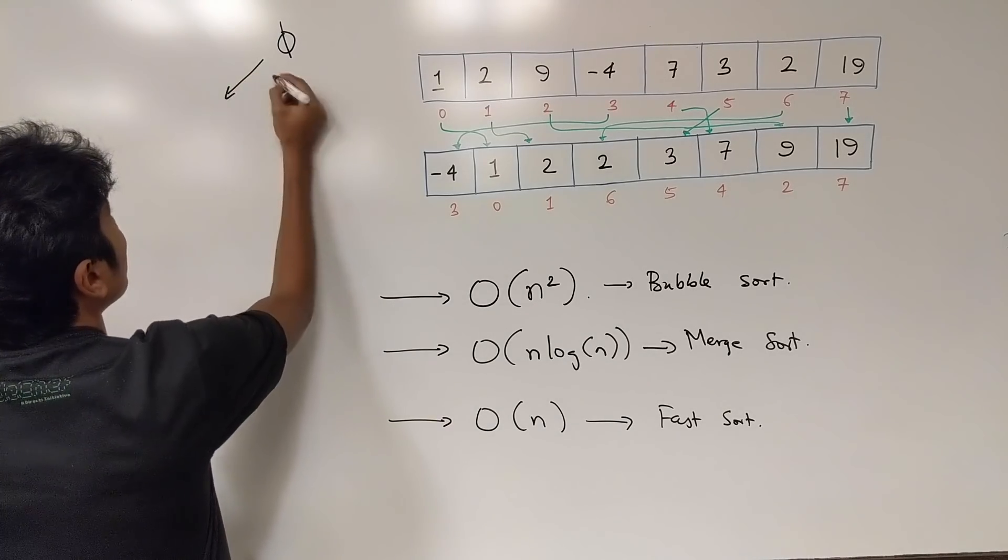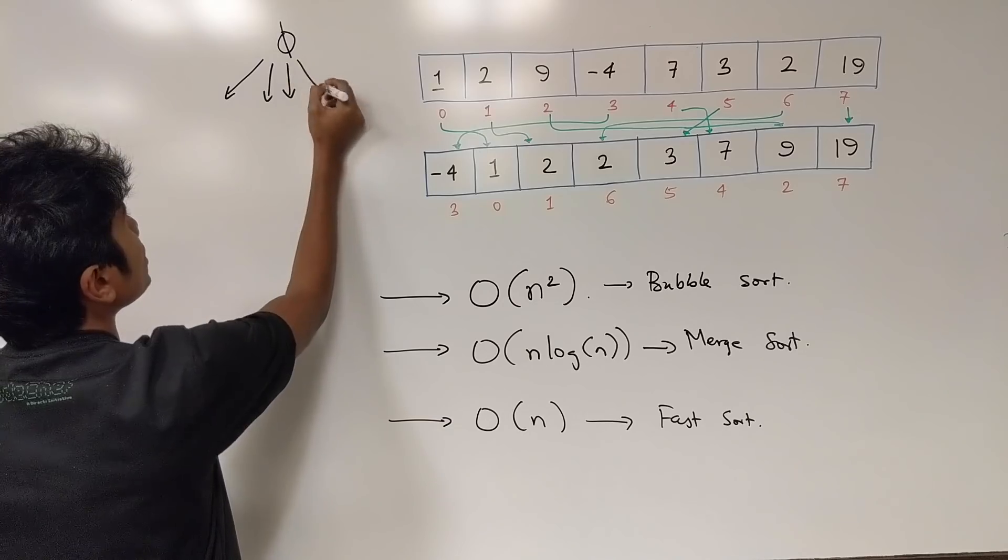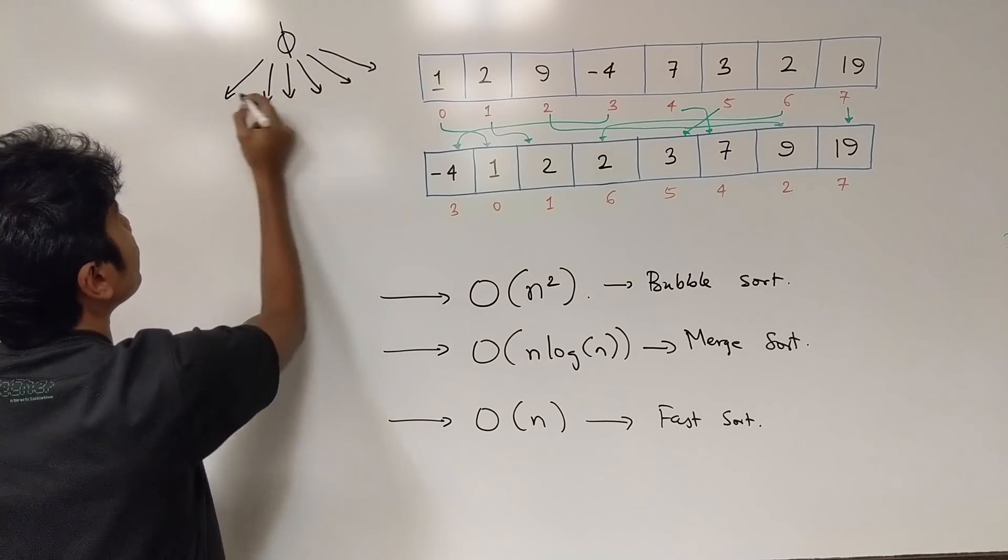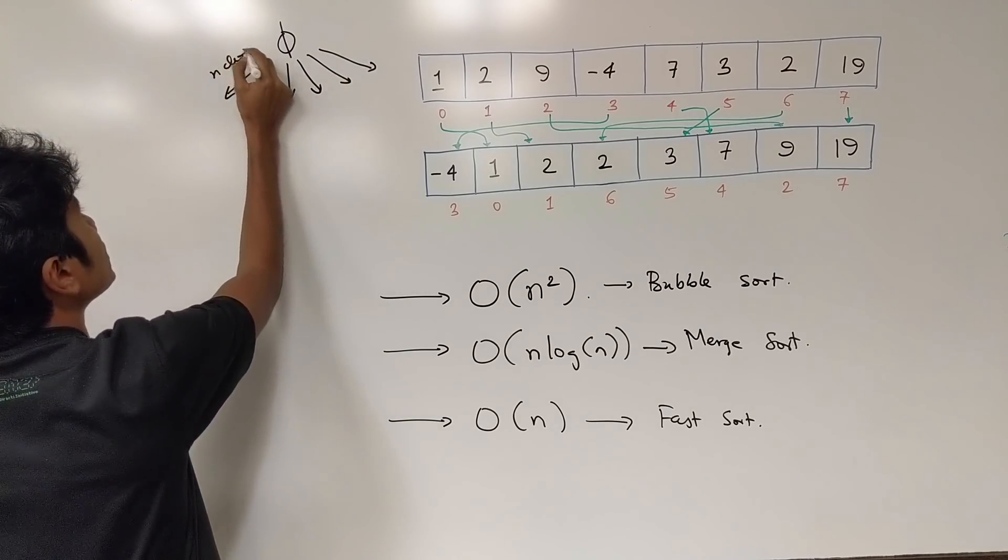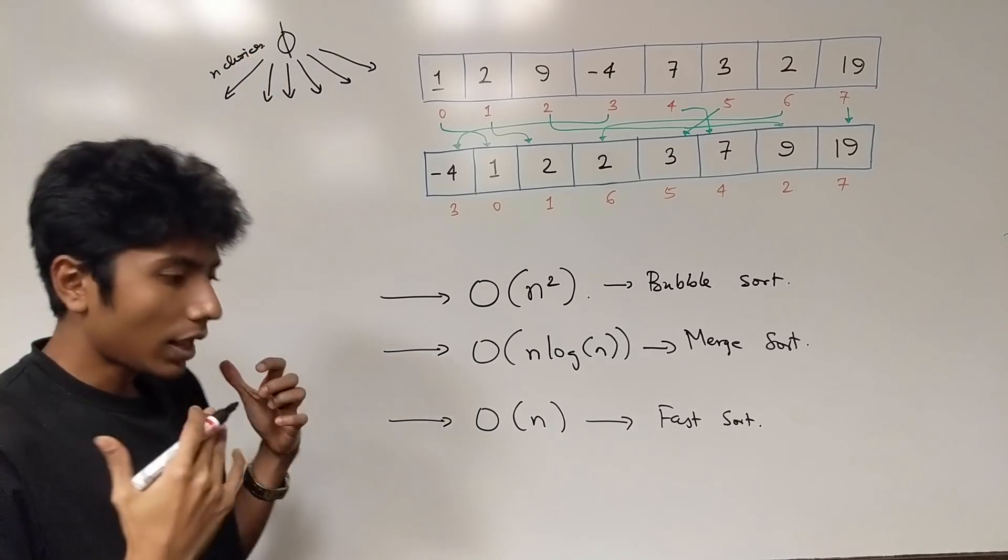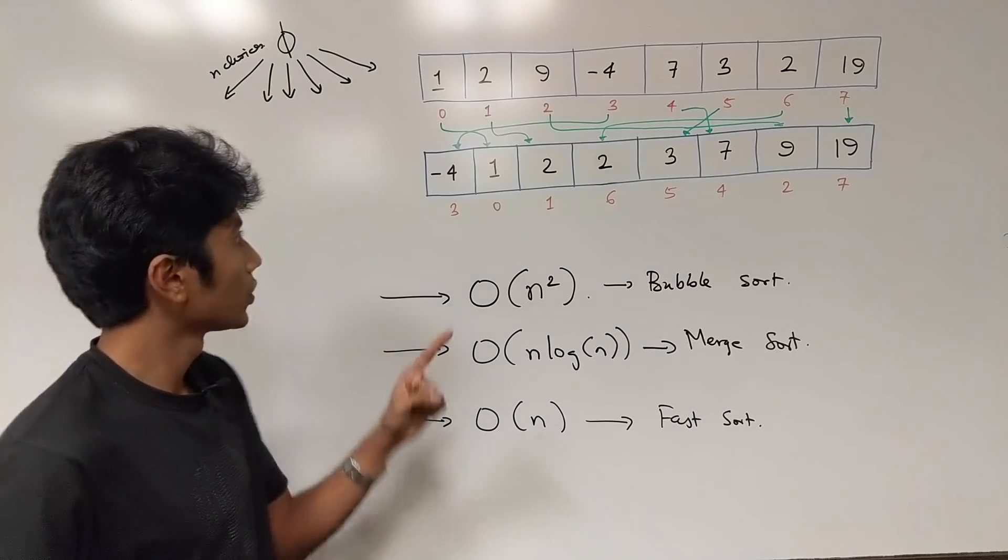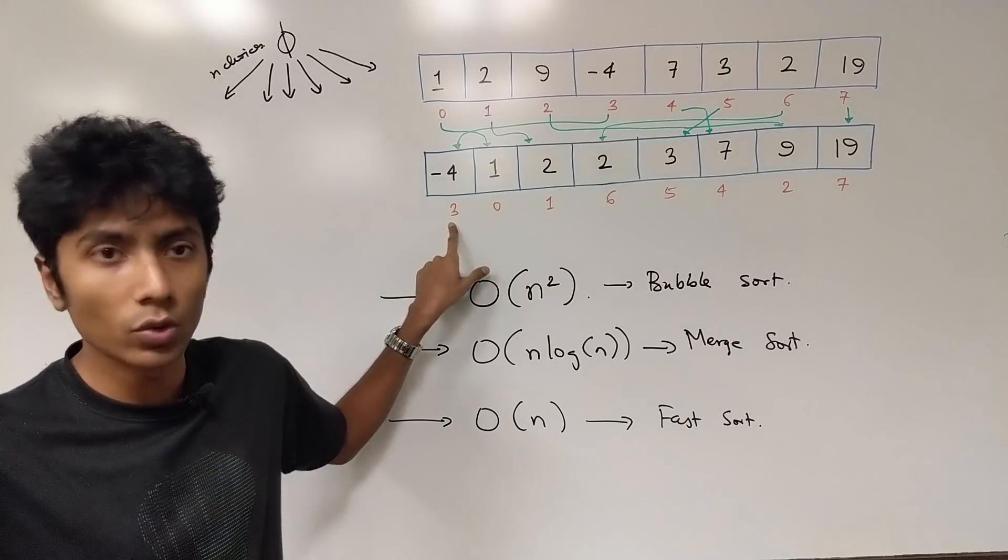So initially I have n choices for my first element. That's n choices. And amongst these choices I need to choose one number. So amongst n numbers I chose 3 over here.